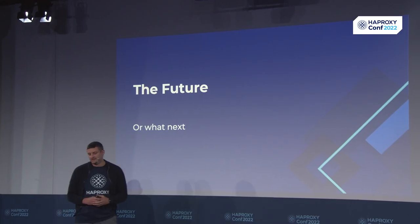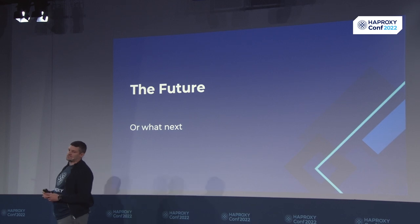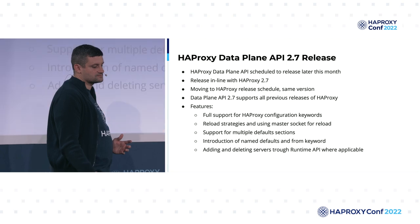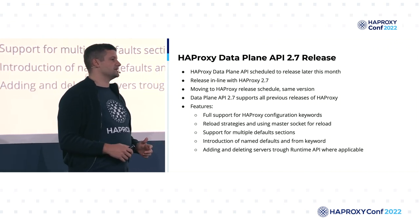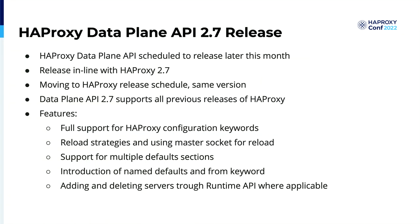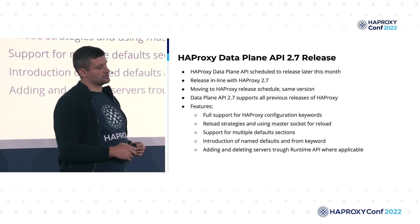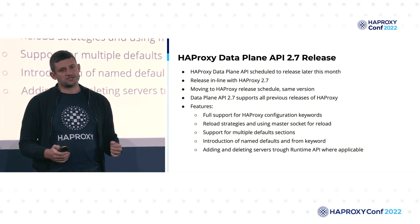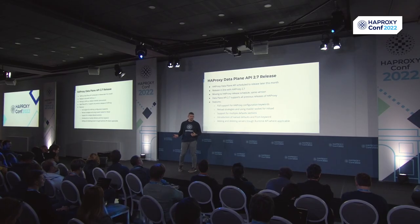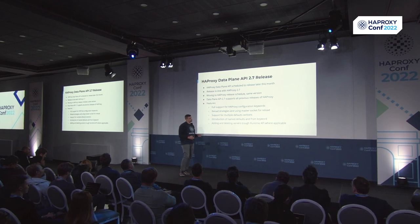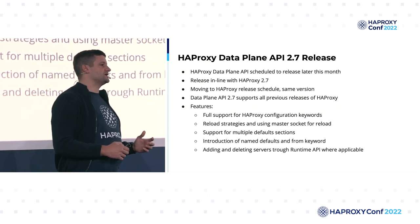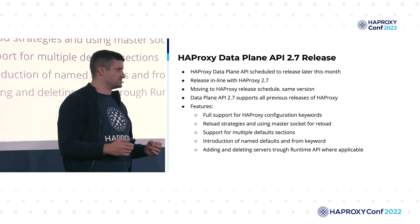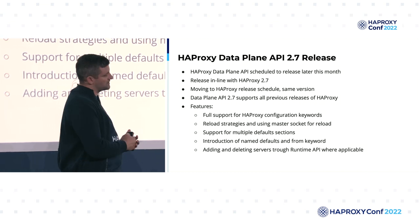With that, our journey doesn't end — we still have goals and challenges to motivate us. Later this month we'll be releasing version 2.7 of the Data Plane API, in line with HA Proxy Community 2.7, and we want to move our release cycle to match HA Proxy's: two releases yearly, with one being long-term support. We'll keep version parity with HA Proxy Community to minimize confusion. Version 2.7 will support all previous HA Proxies, but moving forward we're considering having one version of Data Plane API supporting the same version of HA Proxy to mitigate backward compatibility issues.